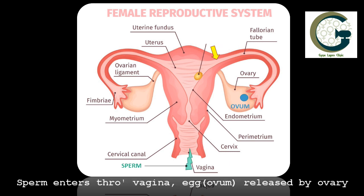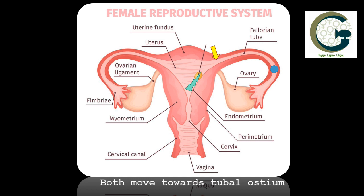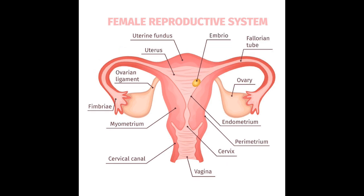The sperm enters through the vagina, which is shown by the green arrow, and the ovum or the egg is released by the ovary, which is marked in blue. The ovum then travels through the fallopian tube finding its way to the tubal ostium. Here, somewhere close to the tubal ostium, the ovum and the sperm meet each other and a pregnancy starts forming. Once the pregnancy starts forming in this area, it then drops itself down into the endometrial cavity or within the uterus, and there — as shown by the golden symbol — is the embryo which starts forming.